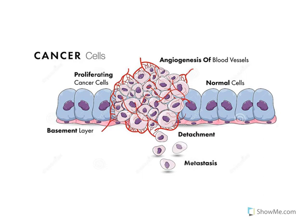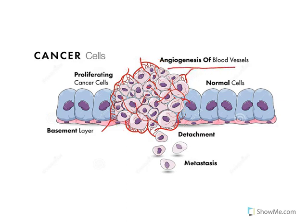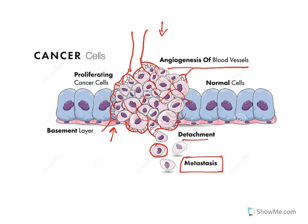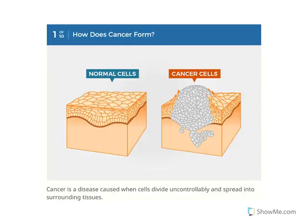Normal cells surround a central cancerous mass. The blood supply to the tumor is known as angiogenesis — the formation of new blood vessels. To multiply, the tumor takes up lots of blood supply, leaving adjacent cells with less. Once it grows, it breaks the basement membrane and releases cells — this is metastasis. These cells spread through blood circulation and attack other cells.